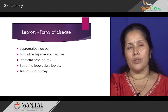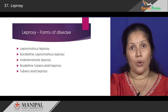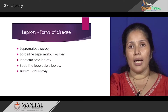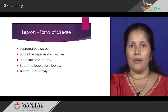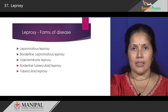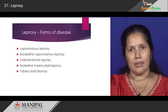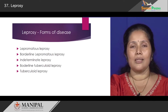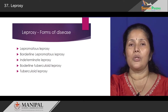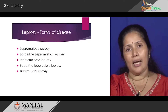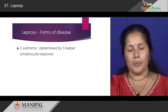Let us look at the different forms of the disease. There are five important categories. If you look at the disease spectrum, you have lepromatous leprosy at one end, while at the other end you have tuberculoid leprosy. In between, you have borderline lepromatous, indeterminate leprosy, and borderline tuberculoid leprosy.